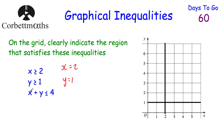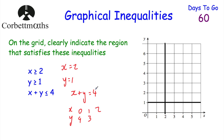Next we're going to draw the line x plus y equals 4. We can do an XY table: choosing x = 0, 1, 2. If x = 0, then y = 4; if x = 1, then y = 3; if x = 2, then y = 2. So we've got coordinates (0, 4), (1, 3), and (2, 2). Now we get our ruler and pencil and draw a nice straight line through those points.